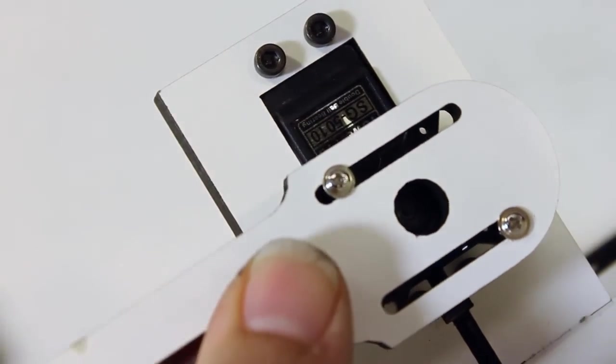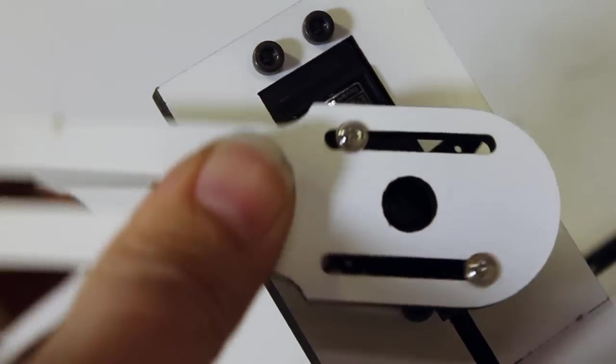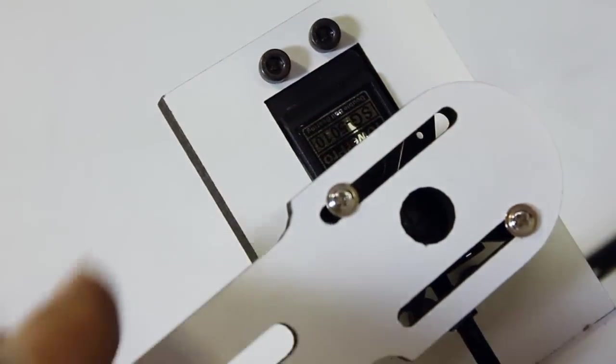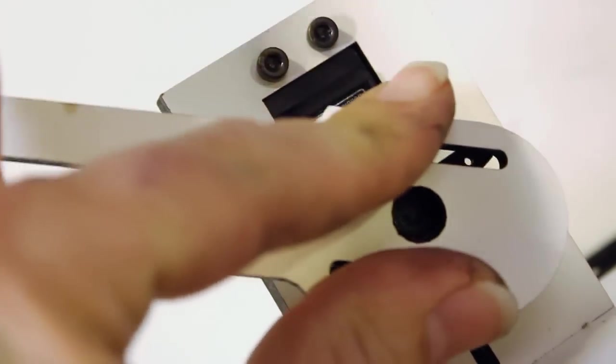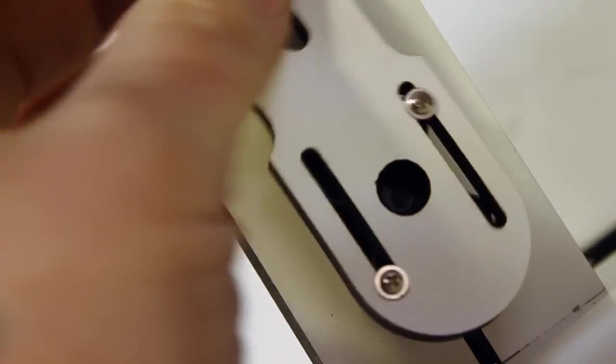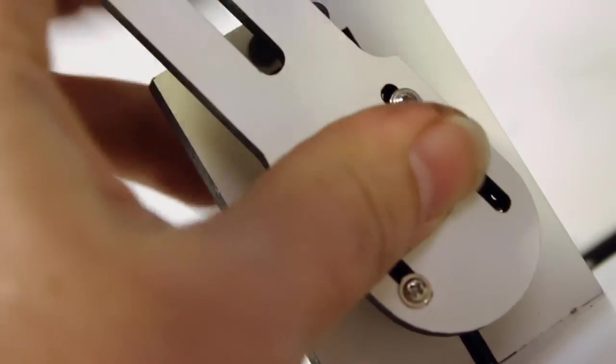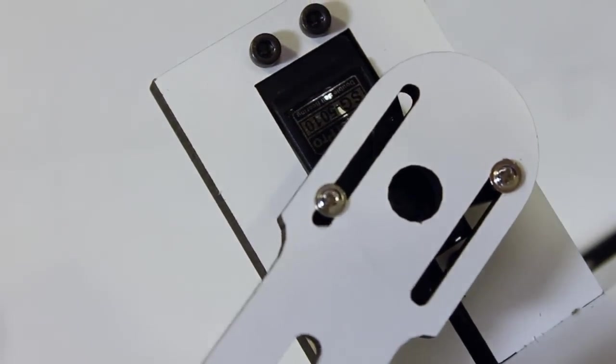Before you screw it down, just turn it and find where the ends of the servo are. Try and set it on there so that you know it's all the way at the end of the servo's range of movement on one side.